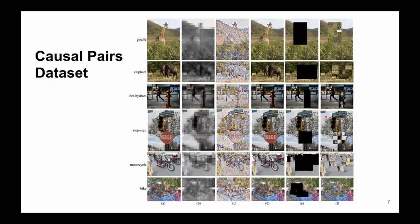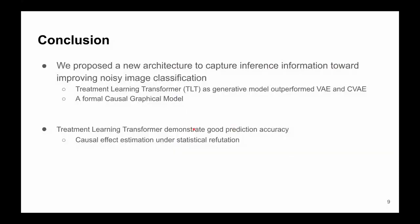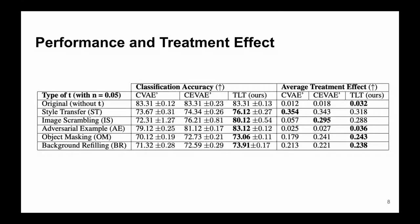We provide a noisy dataset that yields causal pairs. We find that our causal-based treatment learning transformer outperforms the conditional VAE (CVAE) as a generative-based noisy image classification framework on benchmark solutions. Finally, we propose a new architecture to capture inference information for improving noisy image classification, outperforming current baselines. We provide a formal causal graphical model that can be extended to other frameworks. We also perform treatment effect estimation and find this method performs well under statistical evaluation.